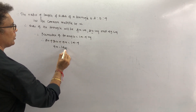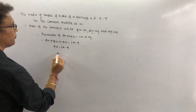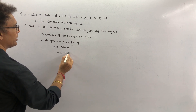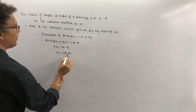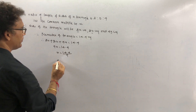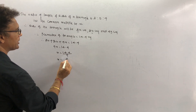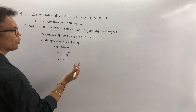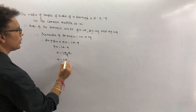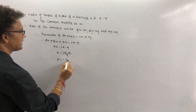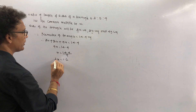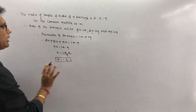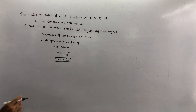So 9x = 14.4, therefore x = 14.4 ÷ 9. We get x = 1.6. The common multiple is 1.6.